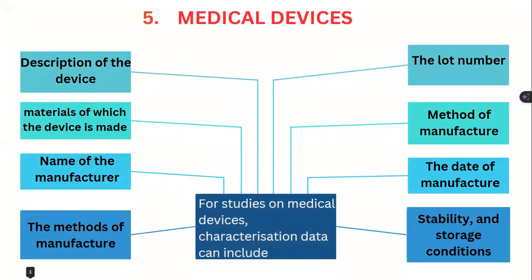For medical devices — such as heart valves, implant rods, or catheters — characterization data may include: a description of the device, what it is and how to use it, the materials it is made of, the name of the manufacturer, the method of manufacture, the lot number, the date of manufacture, and its stability and storage conditions.